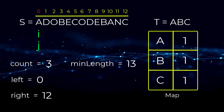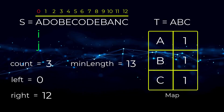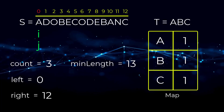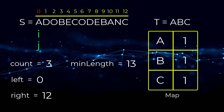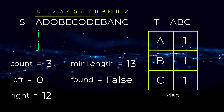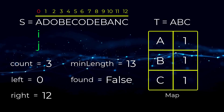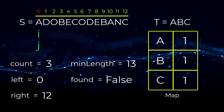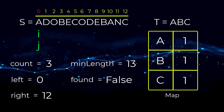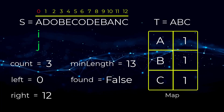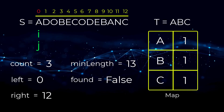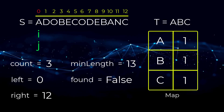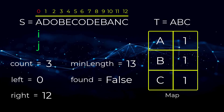Our min length is initialized to 13 because any valid substring in S is guaranteed to be shorter than the length of S. Finally, we need a boolean variable called found to determine if we have found a substring in S, since if we don't find one we must return an empty string. Now let's get into the details of the sliding window algorithm.